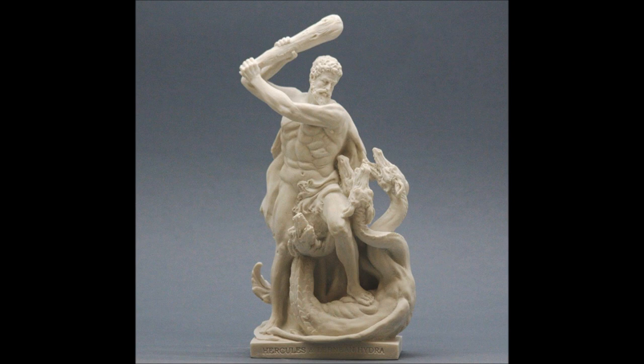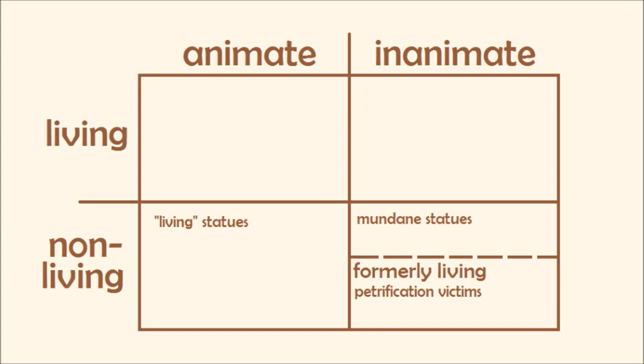First up, we have mundane statues, just like we encounter in real life. These are obviously inanimate, non-living, but counterintuitively, the entities commonly referred to as living statues aren't actually living either — they're merely animate. The qualifications for life include metabolizing, growing, and reproducing, and living statues are never seen doing any of those things. Generally, so-called living statues are simply magical automata, constructs carrying out their creator's will.